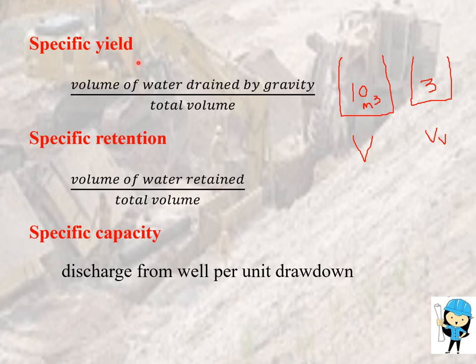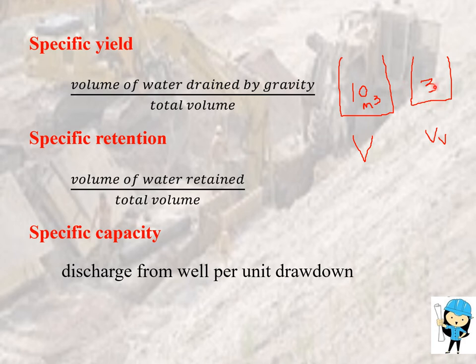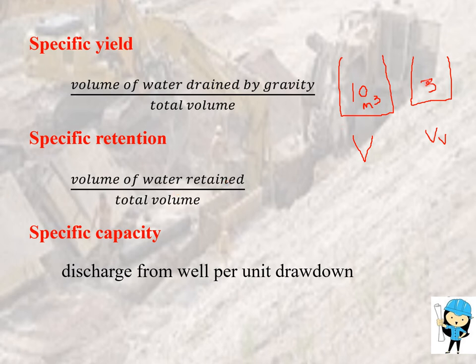Now we are going to see about specific yield and specific retention. To explain these concepts, I have taken a volume of soil of 10 cubic meters. Among this 10 cubic meters, 3 cubic meters is the volume of voids. Among this 3 cubic meters of voids, we calculate the volume of water drained by gravity and the volume of water retained. For example, if the volume of water retained by gravity is 1, then volume of water retained equals 3 minus 1.